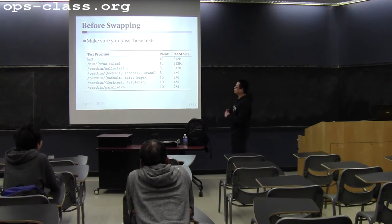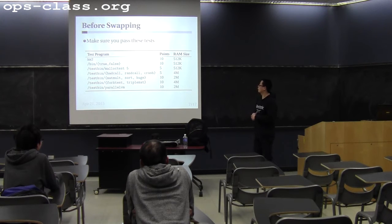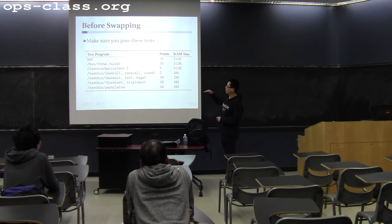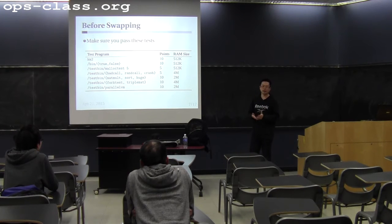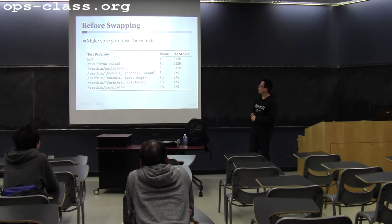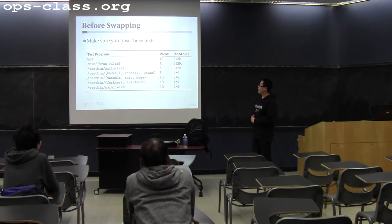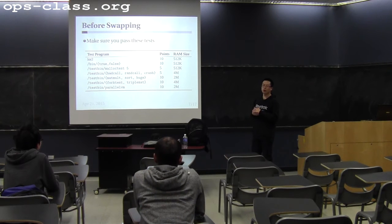Then do the malloc test, which requires implementing the sbrk syscall. Again, you only have 512 kilobytes of memory, so run it multiple times. The same applies to the fork, exec, and crash tests. You also have assignment-3-specific test cases: matrix multiplication, sort, and huge — which are memory-intensive and CPU-intensive. Some may use multiple threads like fork test and triple matrix multiplication. Make sure you can run all of these without any problems before moving on to swapping.